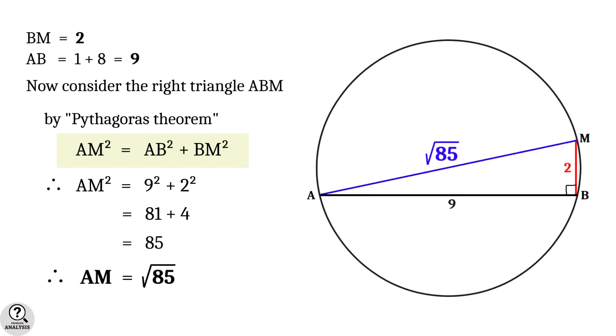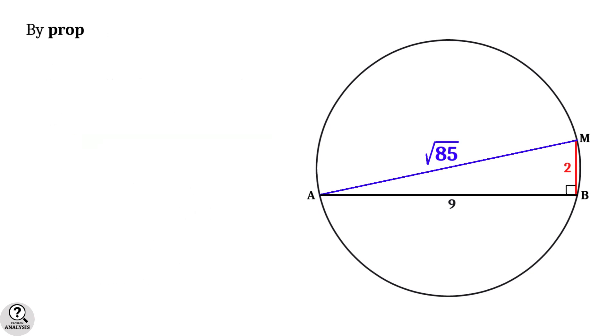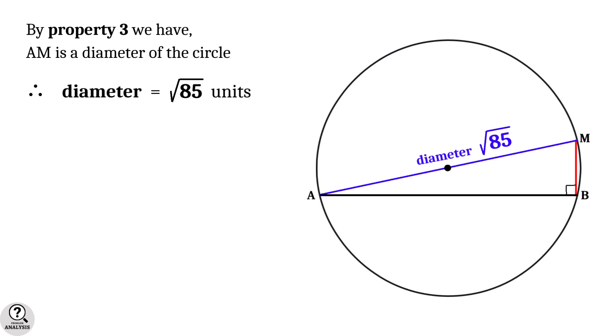That is, AM equals square root of 85. Now by property 3, we have AM is the diameter of the circle. That means diameter equals root 85 units.